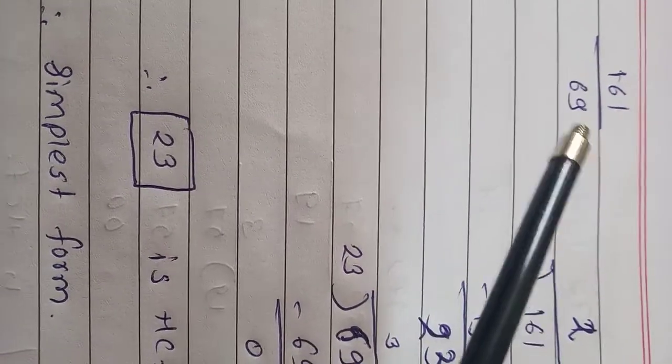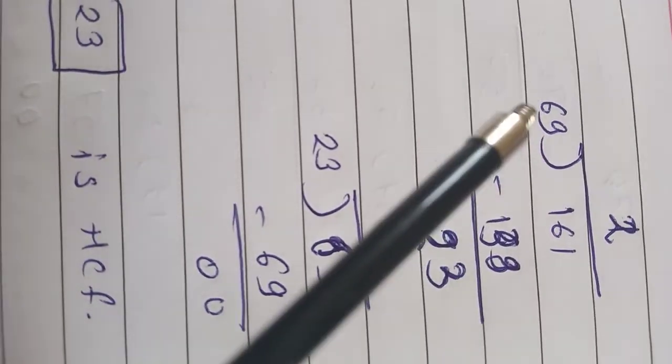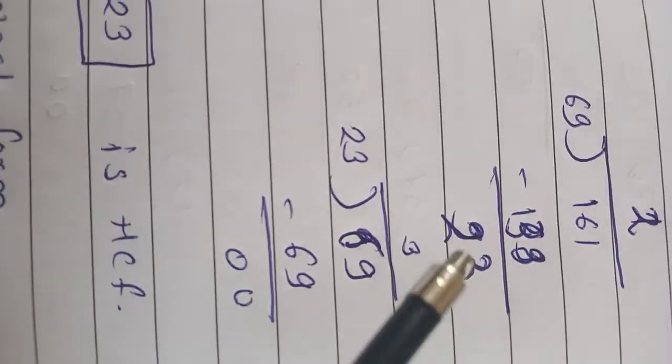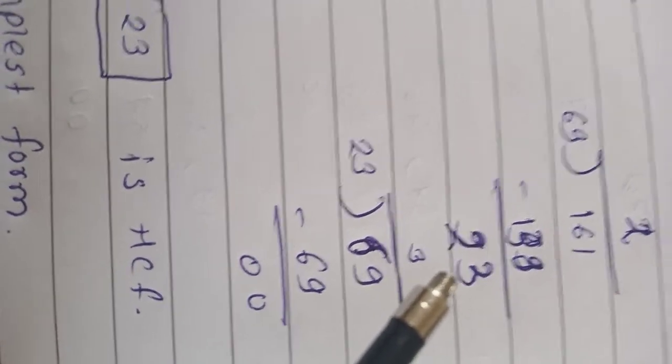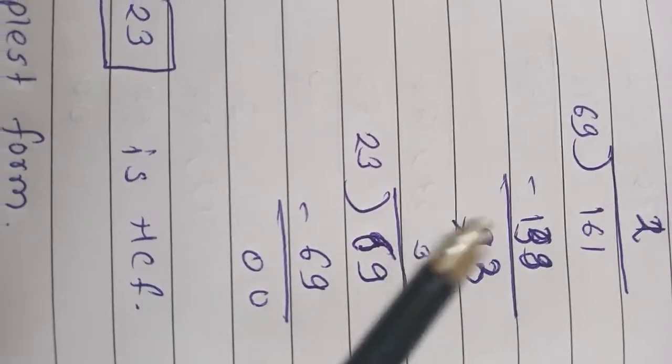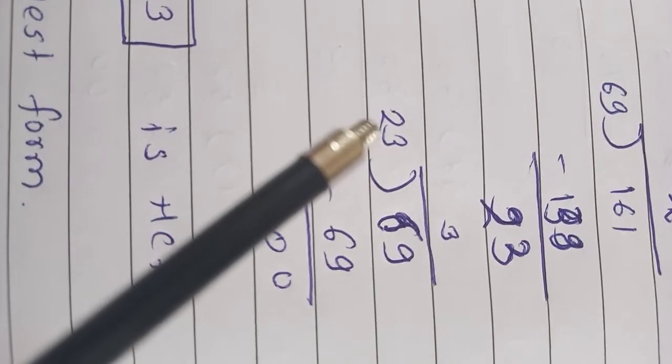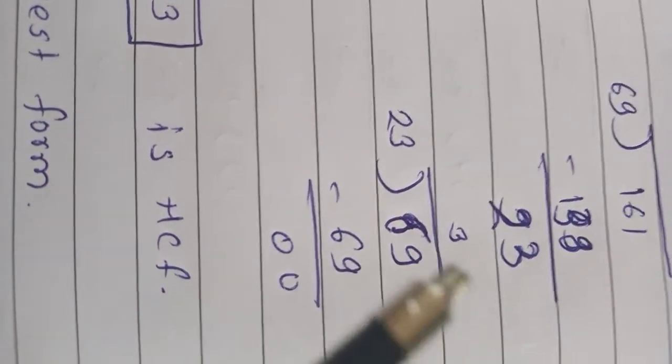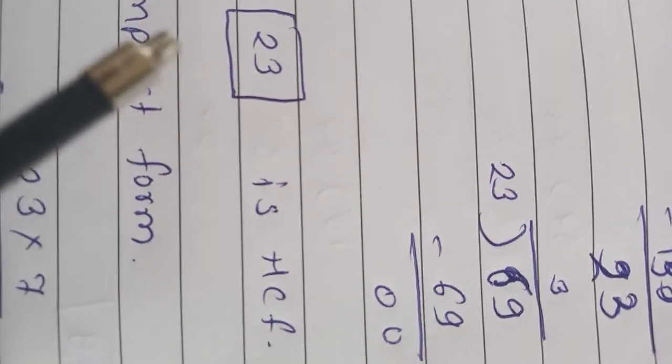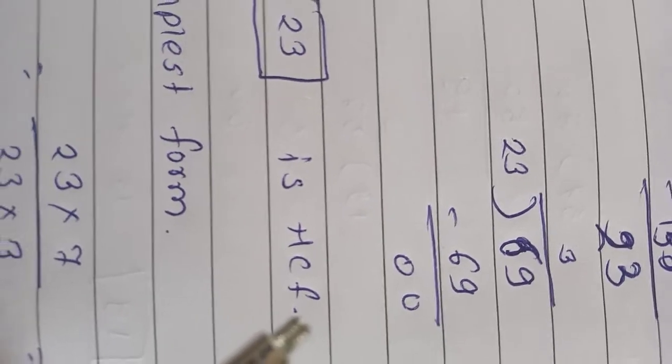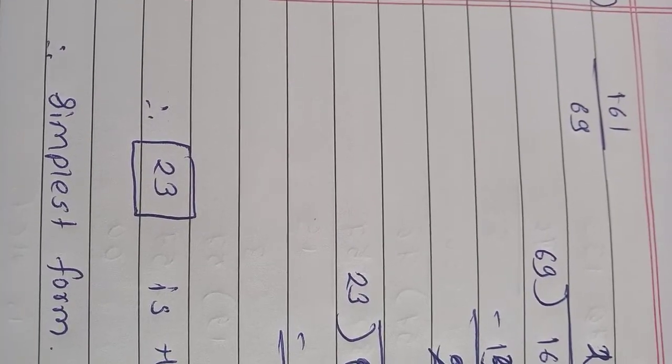Move on to the next sum. That is 161 upon 69. So see, 69 is smaller so that is the divisor. So 161 divided by 69. 69 twos are 138. 161 minus 138 is 23. So 23 is the remainder. Now we divide 69 with 23. 69 divided by 23. 23 threes are 69. 69 minus 69 is 0. So remainder is 0. That's why 23 is our HCF.